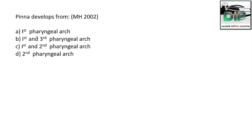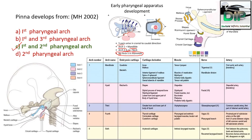Here comes the first MCQ: The pinna develops from — option A: first pharyngeal arc; option B: first and third pharyngeal arc; option C: first and second pharyngeal arc; option D: second pharyngeal arc. The correct answer is C: first and second pharyngeal arc.